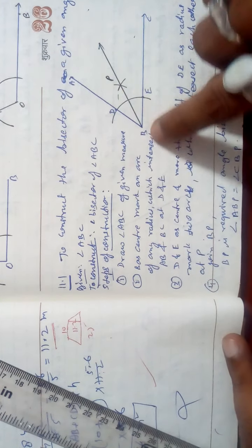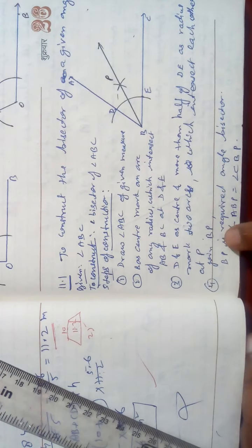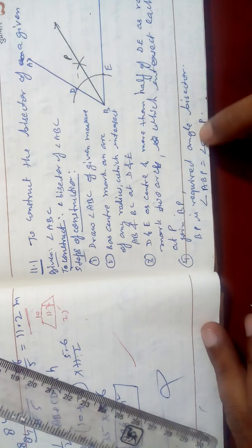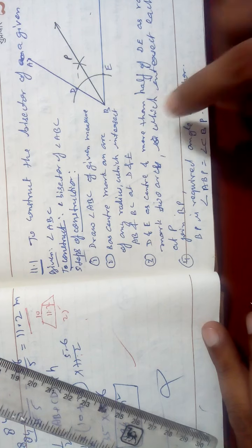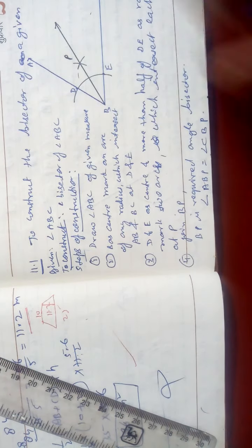The arcs intersect at point P. Join B and P and produce — you will get BP as the required angle bisector, in which angle ABP is equal to angle CBP.